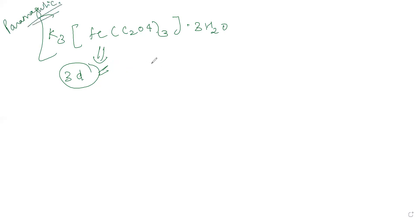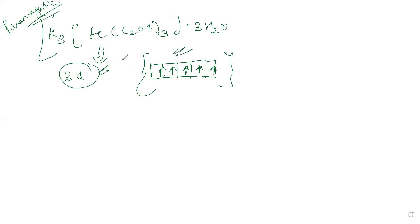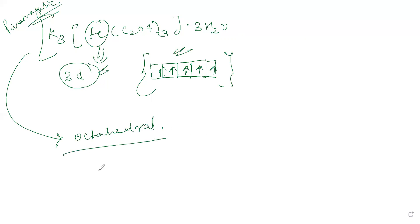Paramagnetic means the pairing of electrons is not complete — there are unpaired electrons present. So this ferric complex is paramagnetic. Another question that could be asked is: what is the geometry of the crystals? The geometry will be octahedral, similar to how we get octahedral geometry in other coordination compounds like alum.